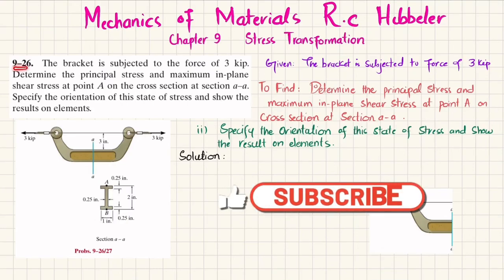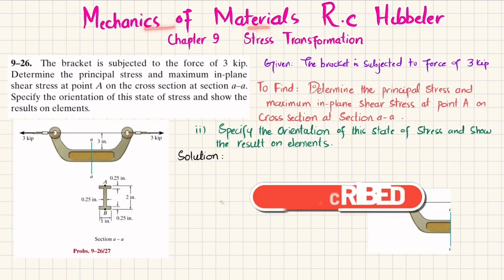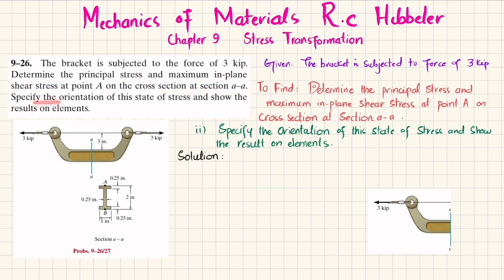Problem 9-26. This problem is taken from chapter 9, Stress Transformation, from the book Mechanics of Materials by R.C. Hibbeler. The bracket is subjected to a force of 3 kips. Determine the principal stress and maximum in-plane shear stress at point A on the cross section at section AA. Specify the orientation of this state of stress and show the result on the element.